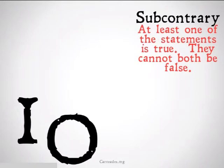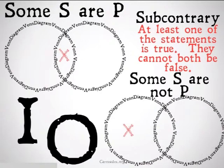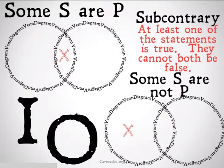Some S are P and some S are not P. The fallacy of illicit subcontrary is where you take the truth of one of these statements to mean something about the other statement — either the falsehood or the truth of that statement. You cannot conclude anything about the other statement simply by the truth of one. Just because some S are P doesn't mean anything about whether or not some S are not P.